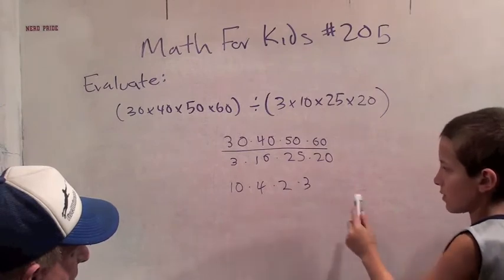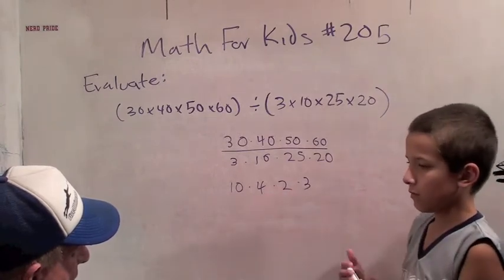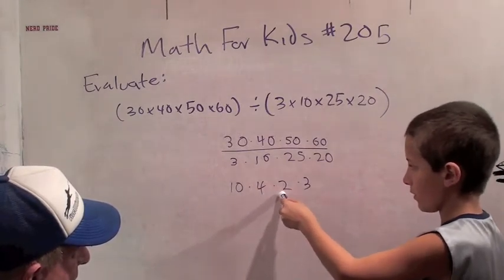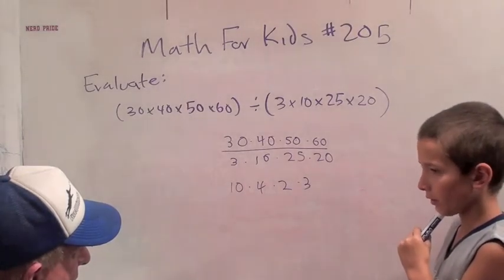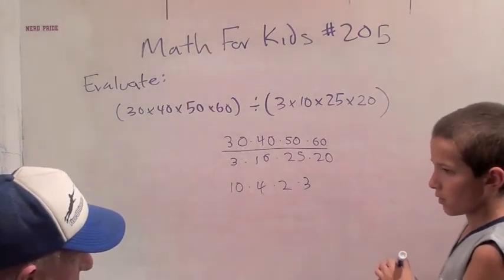We could just do it. 10 times 4 is 40. It is 40 times 6, which is 240. Okay, so why didn't you write that down?